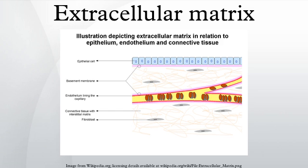There are many cell types that contribute to the development of the various types of extracellular matrix found in a plethora of tissue types. The local components of ECM determine the properties of the connective tissue. Fibroblasts are the most common cell type in connective tissue ECM, in which they synthesize, maintain, and provide a structural framework. Fibroblasts secrete the precursor components of the ECM, including the ground substance.